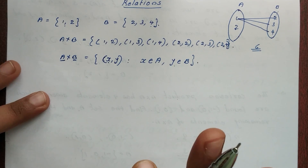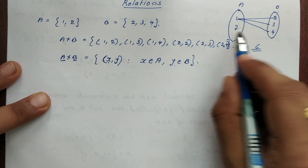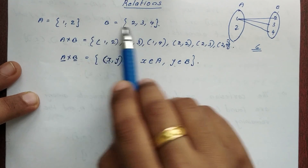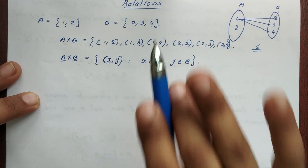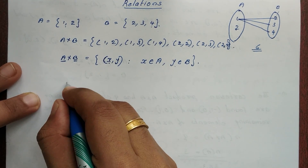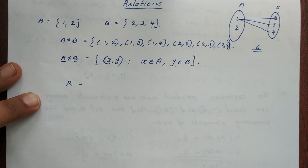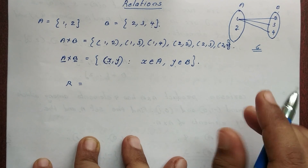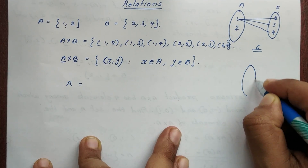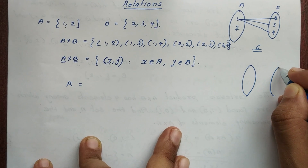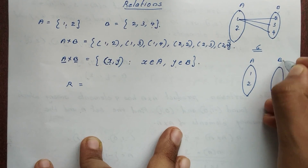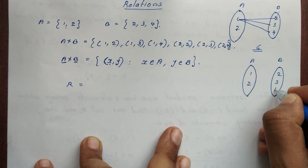Now we will learn relations. I will use the same sets: Set A = {1, 2} and Set B = {2, 3, 4}. I will define a relation R on these sets, drawing the arrow diagram with set A containing 1 and 2, and set B containing 2, 3, 4.